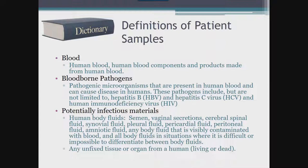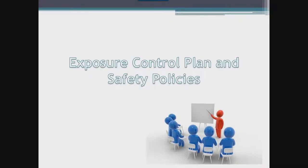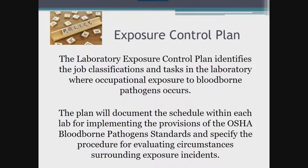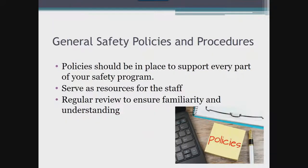The exposure control plan, similar to the chemical hygiene plan, is a document or set of documents that outlines how we keep our employees safe from all the biological agents they could be exposed to in the handling of blood, body fluids, and tissue every single day. Within the exposure control plan, we must identify — according to job classification or job description — whether and how bloodborne pathogen exposure occurs. Additionally, the exposure control plan is meant to specifically lay out all the components of the OSHA bloodborne pathogen standards and how they are carried out by the laboratory. You should also have general safety policies in place to support every part of your safety program.